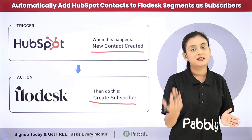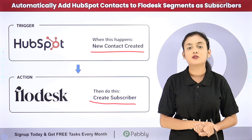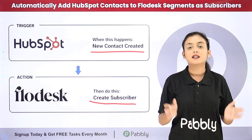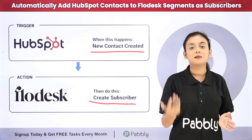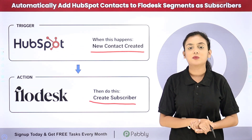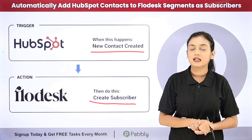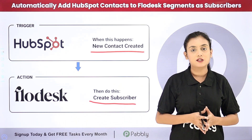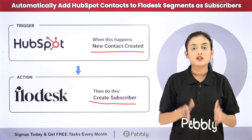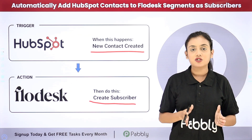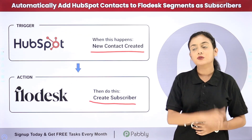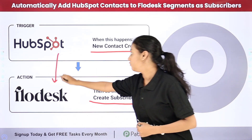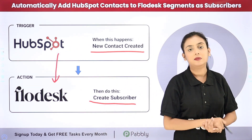If I am going to do this manually, it is going to take me a lot of time. So what I did was I simply created an automation with Pabbly Connect, which is an amazing automation and integration software. In this automation, we are going to create a connection between HubSpot and Flowdesk with Pabbly Connect.